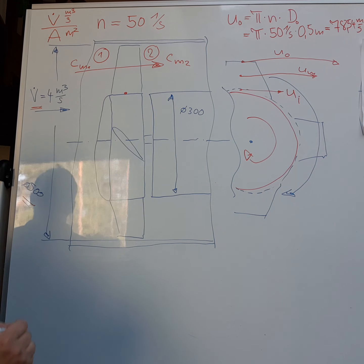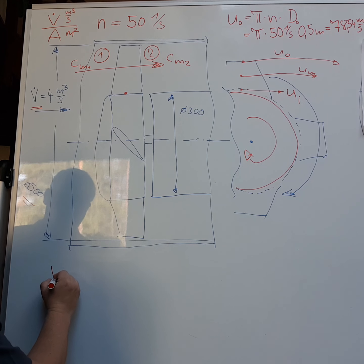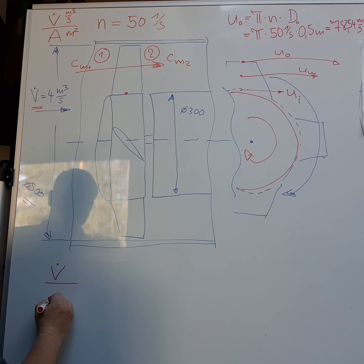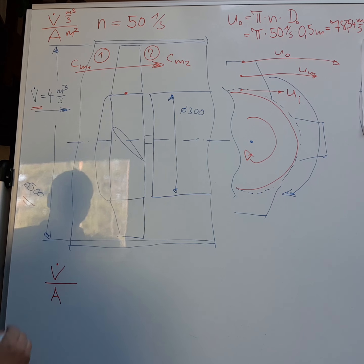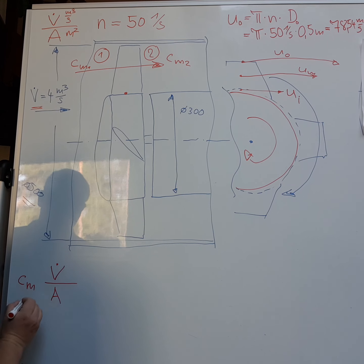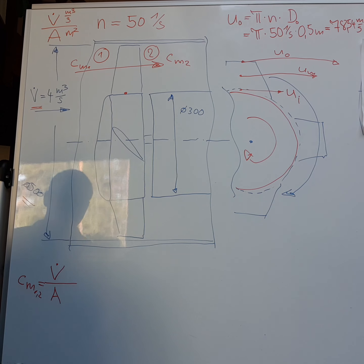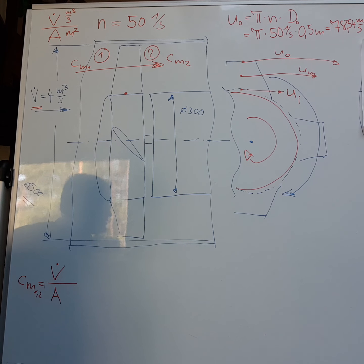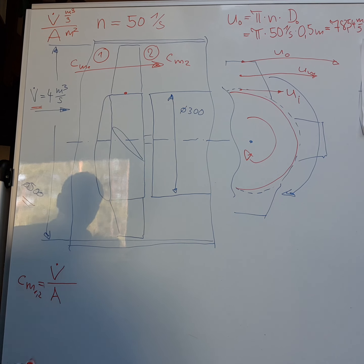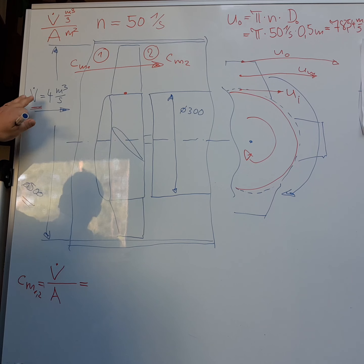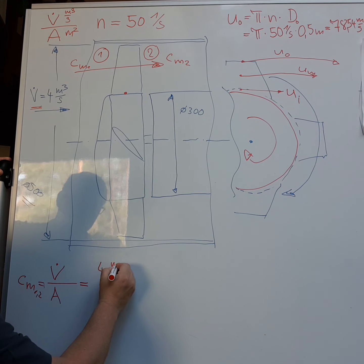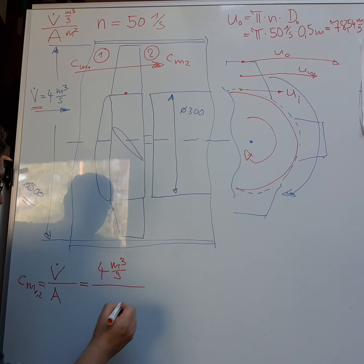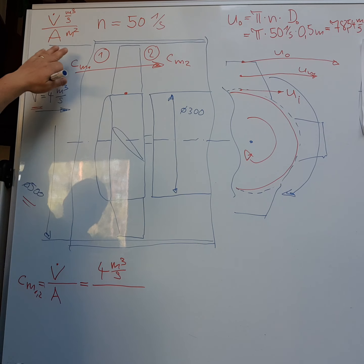We have the volume flow divided by the area is my C mean velocity 1 and 2. Let's make it easier and say the velocity at the entry and the velocity at the exit is the same. So my volume flow was 4 cubic meters per second divided by the area of the duct.